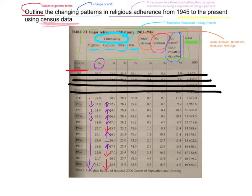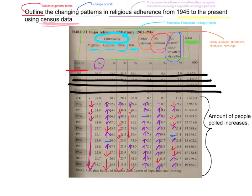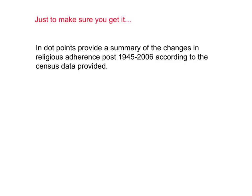If you're back, I'm guessing you have finished with that census data and yours should look just like this. I also find that color coding makes it a little bit easier, but that's because I'm a visual learner. Now that you've done that, the next thing I need you to do is put it in writing. In dot points, write a short summary — an outline of the changes in religious adherence post-1945 all the way to 2006 according to the census data. If you can put this into words, then you get it.